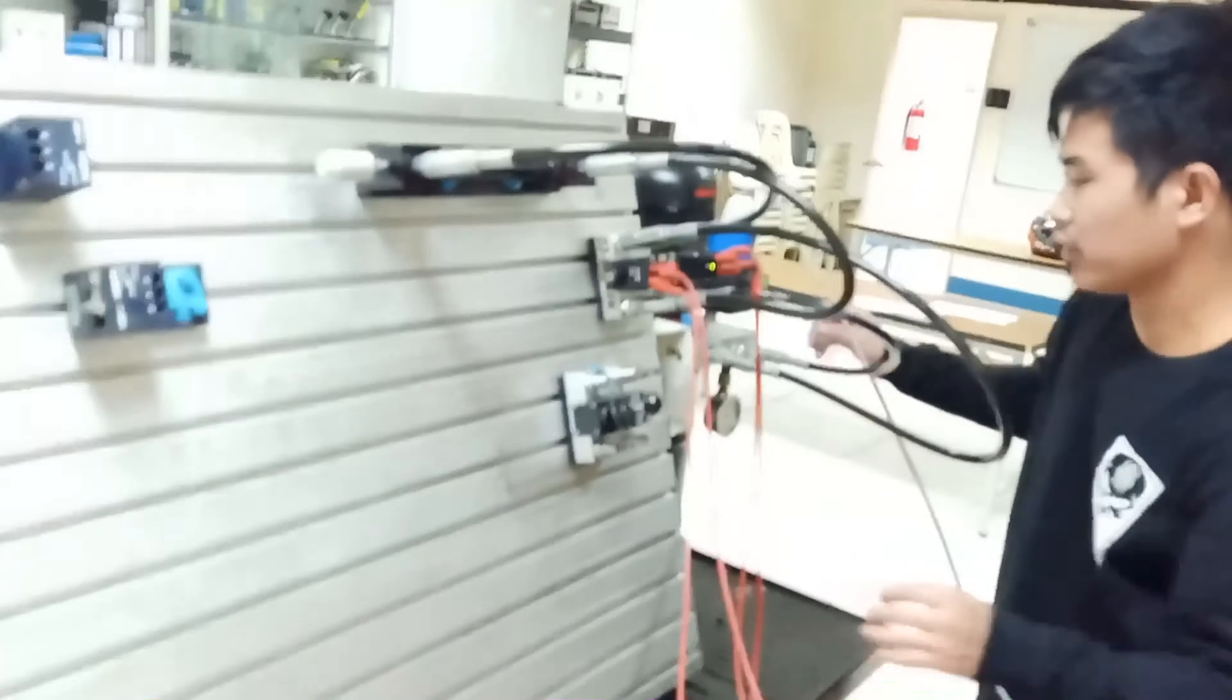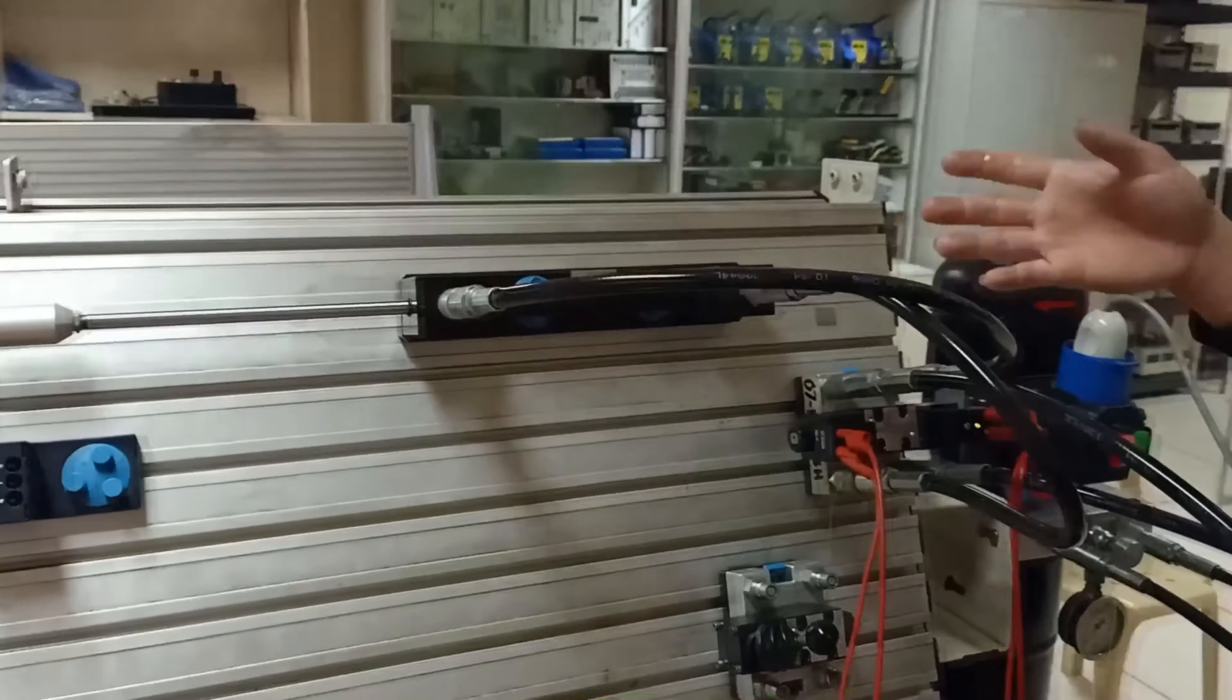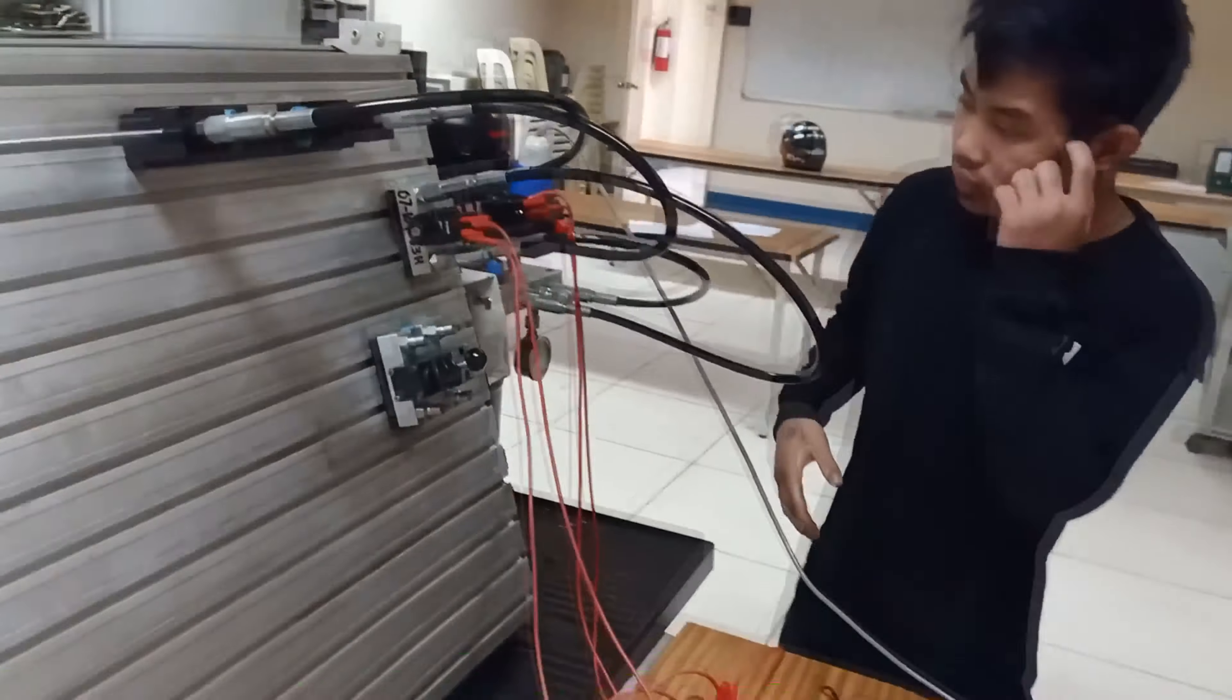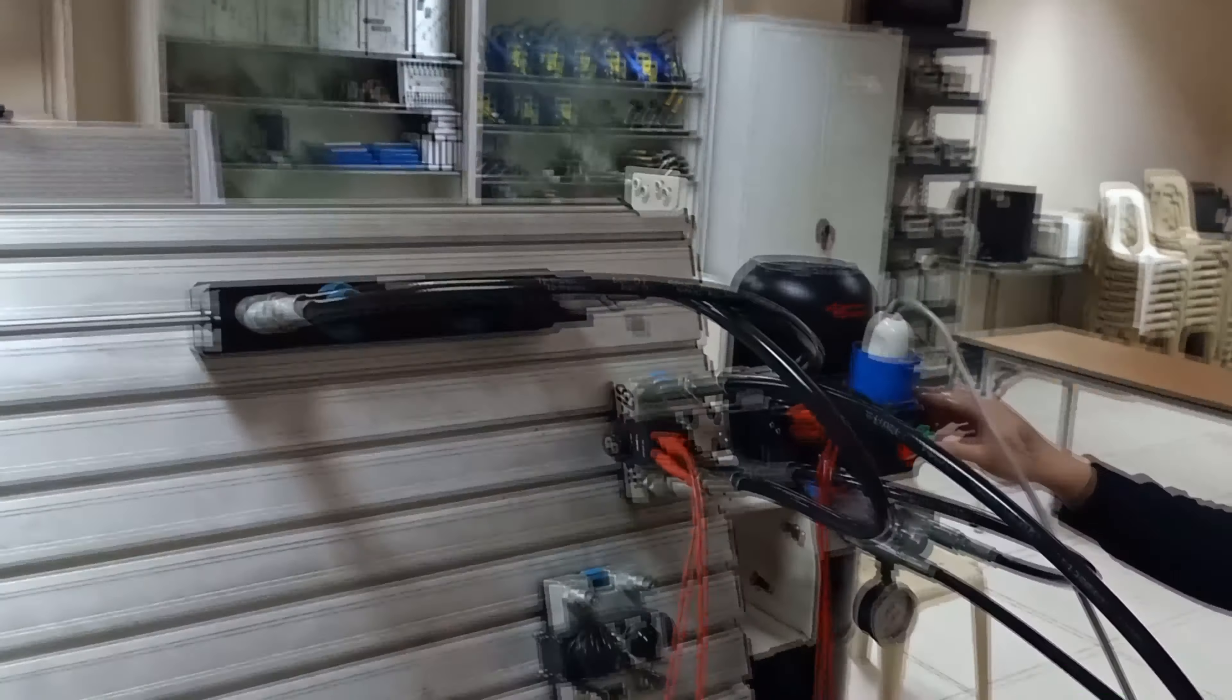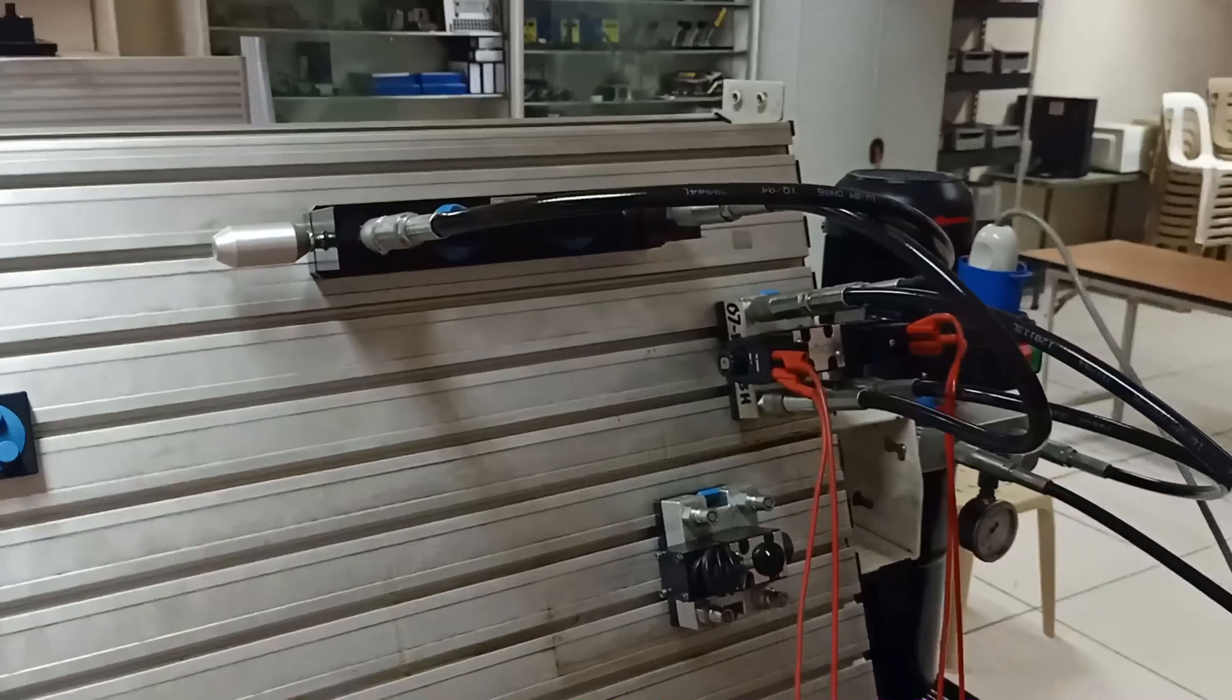So I will now energize the coil A. As we can see there, an extension. And when we are going to energize the coil B, that is what we call retraction.